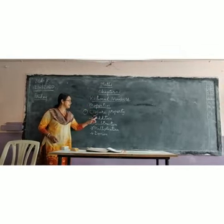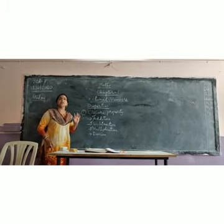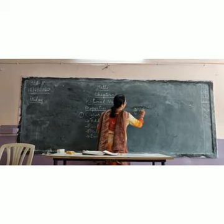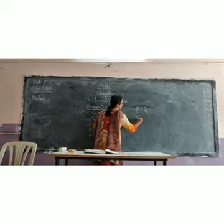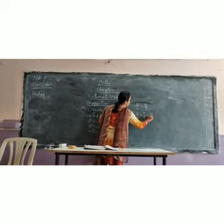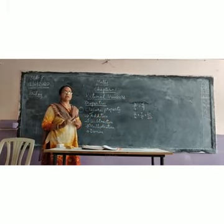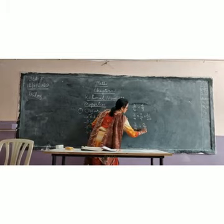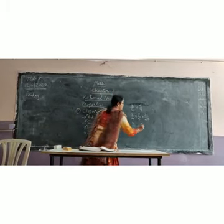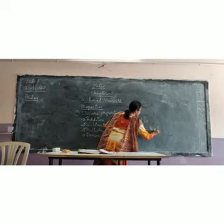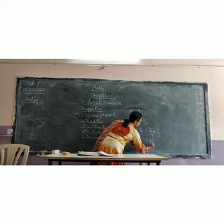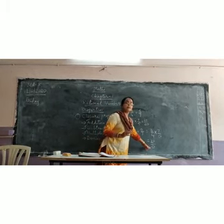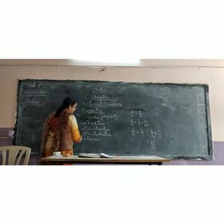Now the closure property holds for addition, subtraction, and multiplication. Let's see whether it holds for division. If we divide the rational number 3 upon 4 by 0 upon 7, then the answer involves dividing by zero. We get 21 upon 0, and the answer is not defined. So from this we can see that closure property does not hold for division — closure property is not satisfied for division.